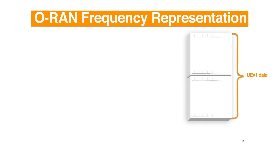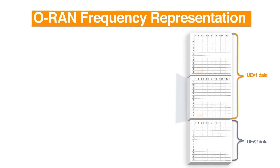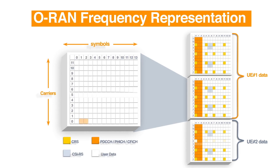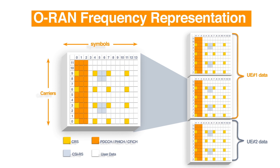There are four main messages for the eCPRI protocol: the C-plane or control plane, the U-plane or user data plane, the S-plane or synchronization plane, and a separate messaging protocol for management, which is the M-plane. Since the LLS split is in the frequency domain, the interface is defined on the basis of resource blocks of 12 tones and symbols.